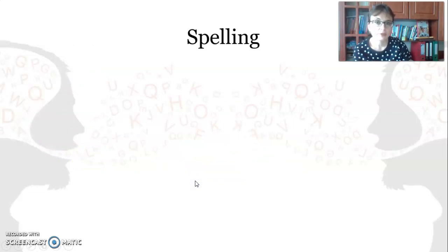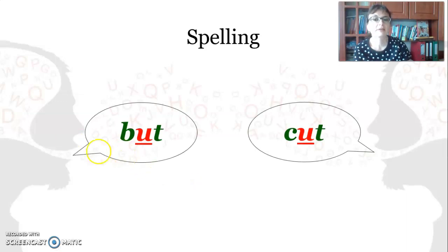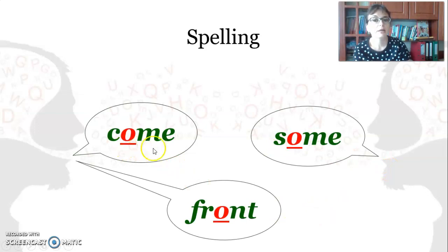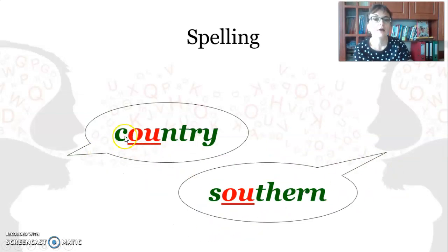When it comes to spelling, it can be spelled via U as in but or cut, via O as in come, some, front, via OU as in country, southern.